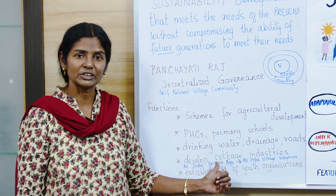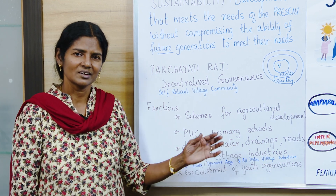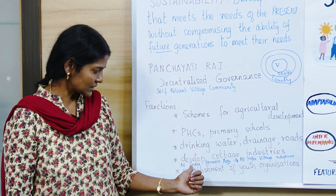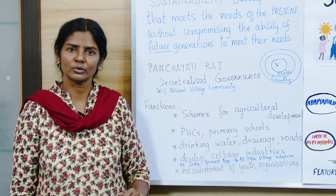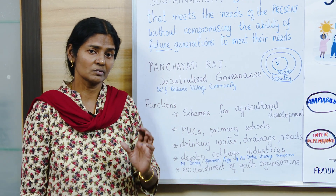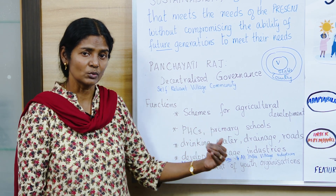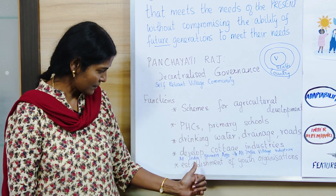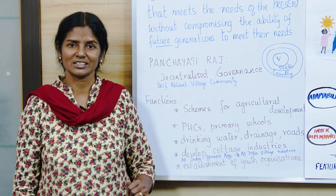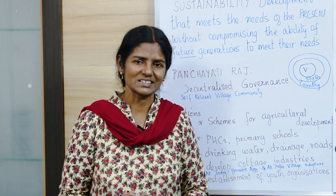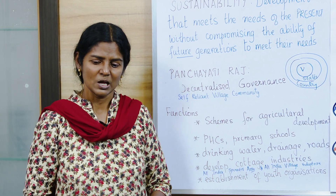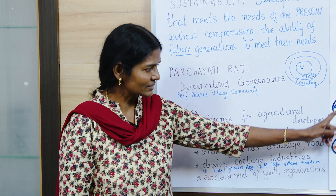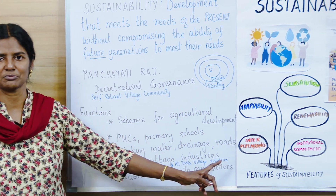Developing cottage industries was always part of Gandhiji's vision. He started the All India Spinners Association and All India Village Industries, where spinning and weaving were encouraged so that cottage industries flourished and products were marketed. Finally, establishment of youth organizations — he believed that today's youth will be tomorrow's responsible citizens. These are the functions of Panchayati Raj and the principles of sustainability.